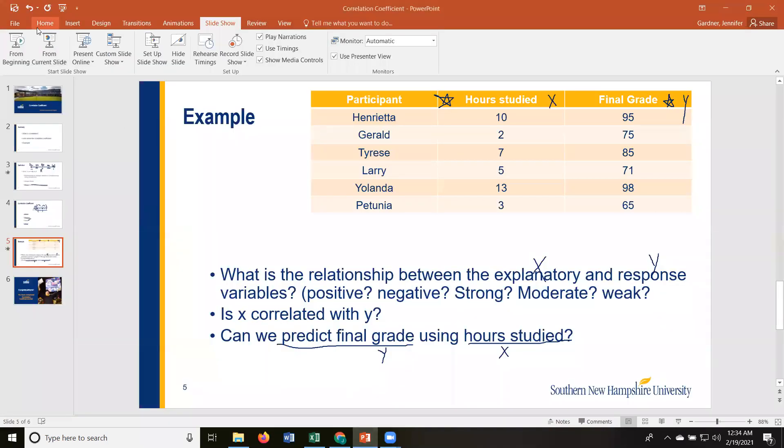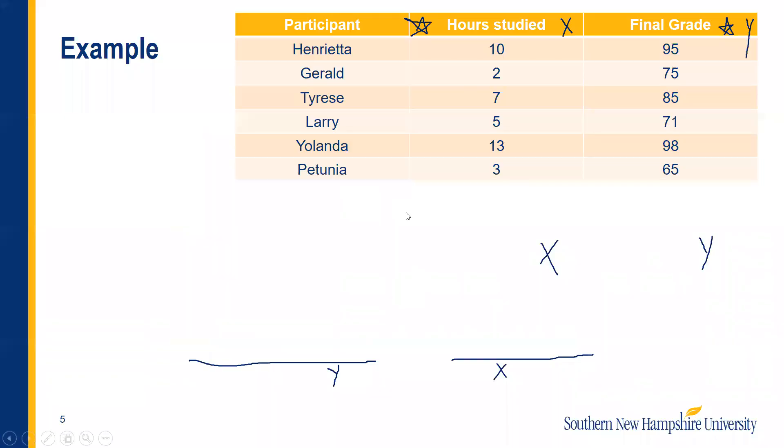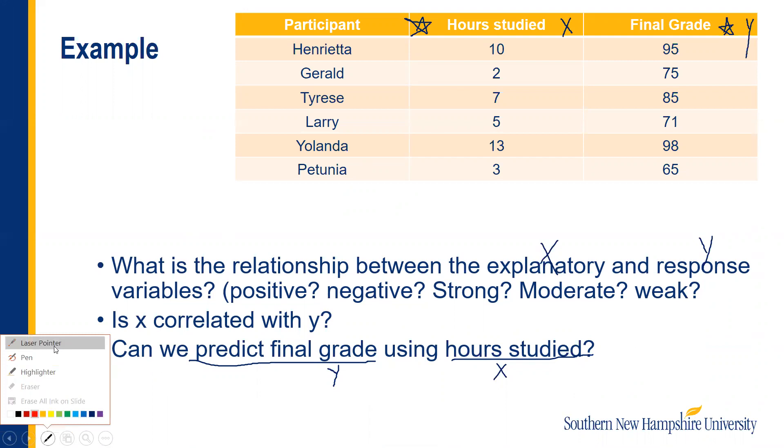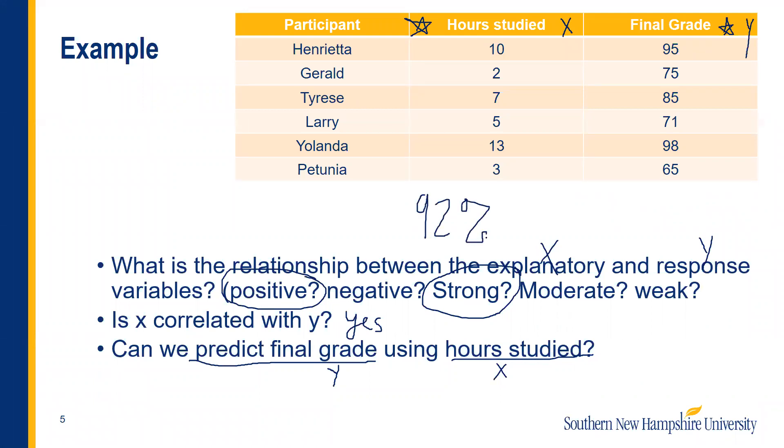So thinking back to this question. It says, can we predict the final grade using the hours studied? Yeah. Because X was correlated to Y. It was a strong correlation. It was a positive correlation. A positive strong correlation. It was 92% correlated because our R was 0.92, if I round. And so can we predict the final grade using the hour study? Based on this, yes, we can.